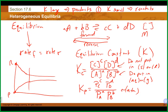K is a constant for a particular reaction written at a specific temperature. Temperature is the only thing that affects the actual value of K. The same reaction at two different temperatures gives two different K values, but multiple experiments at the same temperature should yield the same K value.